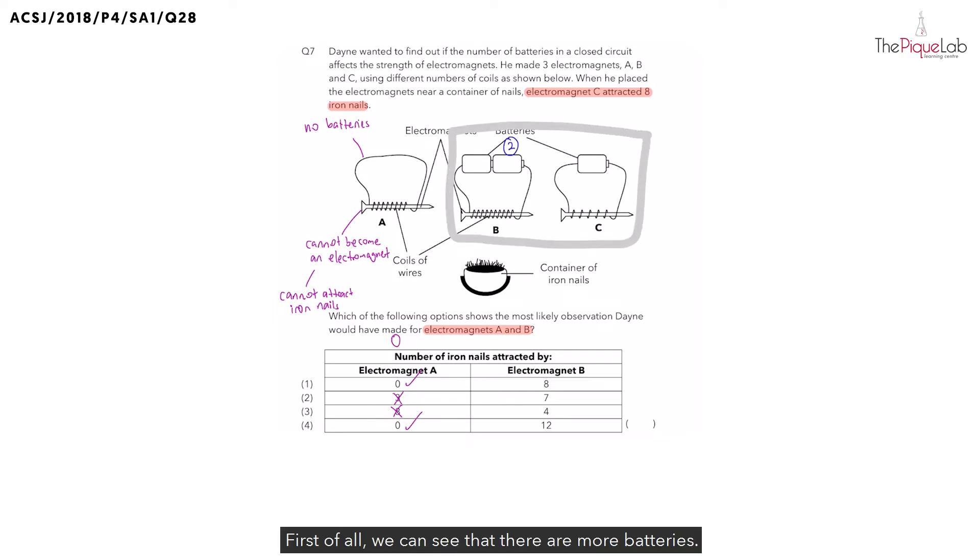First of all, we can see that there are more batteries. So let's write this down: we know that there are more batteries compared to C. And not only that, what other differences can we see? We can also see that there are actually more coils of wire around the nail.